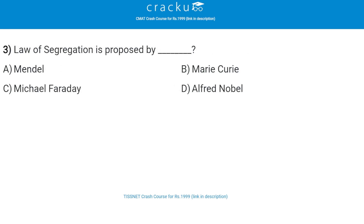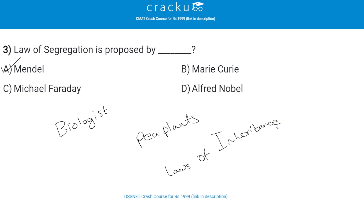Next: the law of segregation is proposed by whom? The correct answer is Mendel, that is option A. Gregor Mendel is a biologist who, through his work on pea plants, discovered the fundamental laws of inheritance. He deduced that genes come in pairs and are inherited as distinct units, one from each parent. Mendel tracked the segregation of parental genes and their appearance in the offspring as dominant or recessive traits.